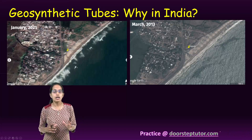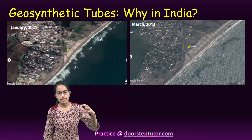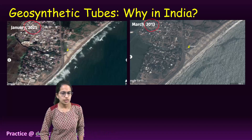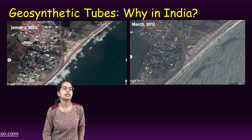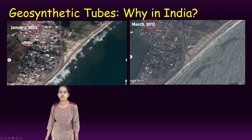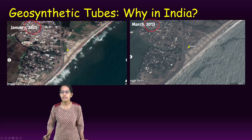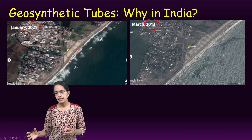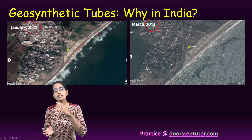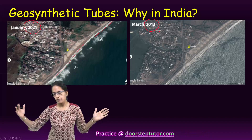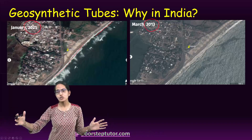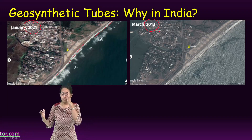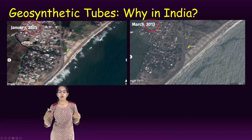If you look at satellite imagery from 2013 versus 2021, you would see a white line indicating the presence of the geosynthetic tube in the region. It acts as a natural barrier, helps in dewatering, is available in large sizes, has easy installation, better accuracy, is cost-effective, and is made with ultraviolet-resistant materials.